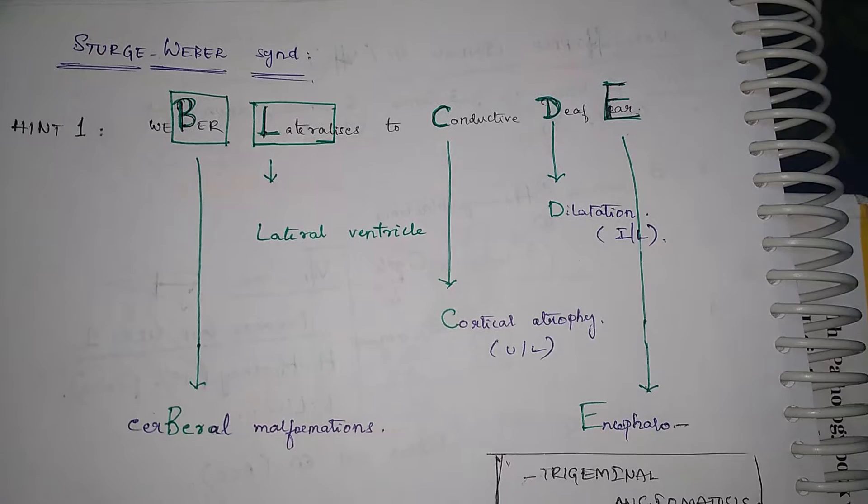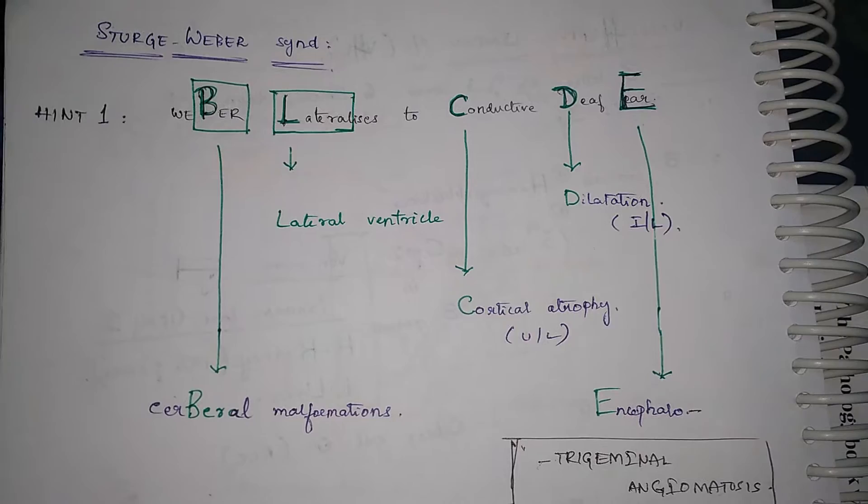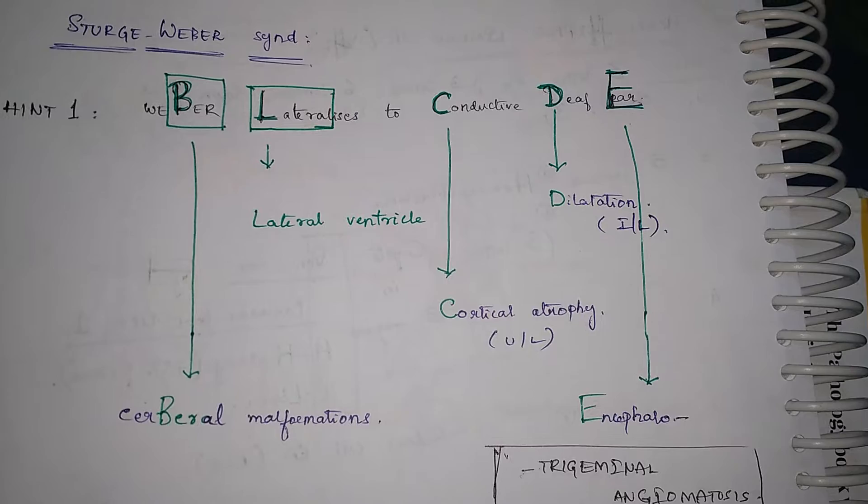So Weber we have cerebral, cerebral I have converted to cerebral just for our mnemonic. So cerebral malformations L for lateralizes here we have lateralizes so lateral ventricles involvement.